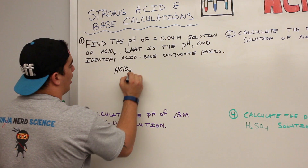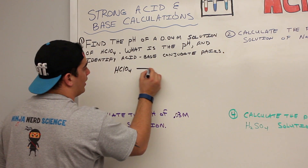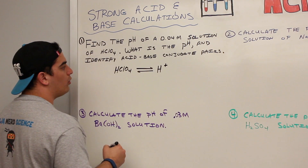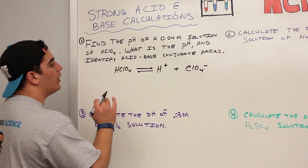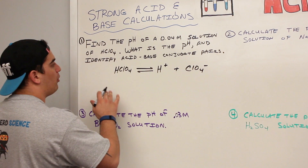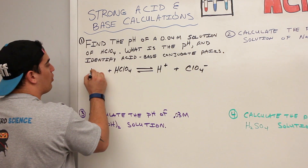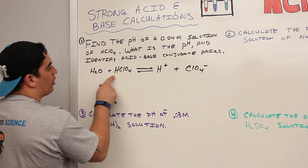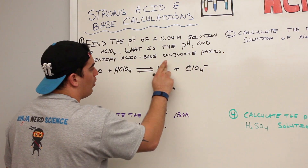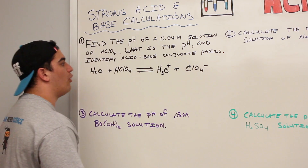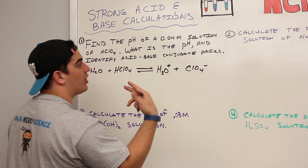So if we have perchloric acid, HClO₄ — what does an acid do? According to Bronsted-Lowry, an acid donates a proton. So perchloric acid gives up H⁺ and ClO₄⁻, which is our perchlorate. If we really want to be specific, we can react perchloric acid with water. Since perchloric acid is acting as the acid, it donates a proton onto H₂O, and H₂O becomes H₃O⁺, the hydronium ion. Before we calculate pH, let's identify the acid-base conjugate pairs.